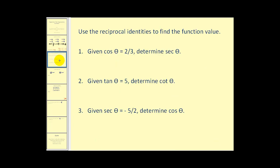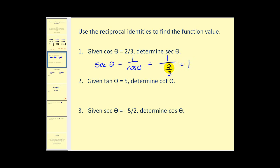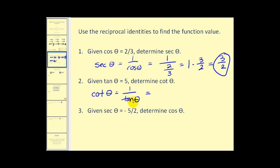For the purpose of this video, we want to use that information to find trig function values. Given cosine theta equals two-thirds, we can determine secant theta, since secant theta equals one divided by cosine theta. So we have one divided by two-thirds, which equals one times the reciprocal, three-halves — so secant theta equals three-halves. Similarly, given tan theta equals five, cotangent theta equals one over tan theta, so cotangent theta equals one-fifth.